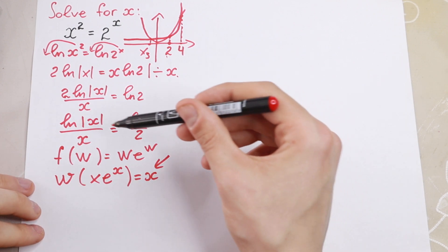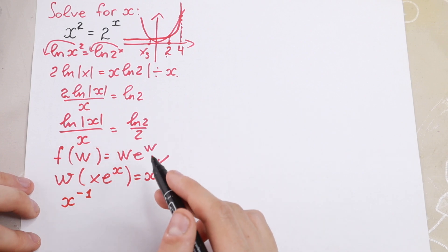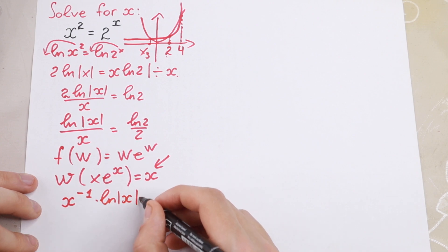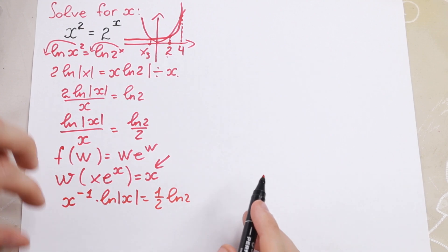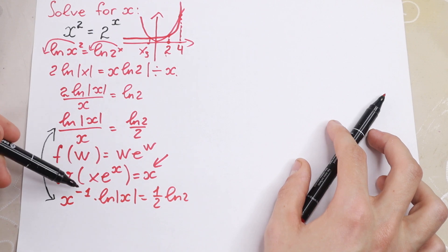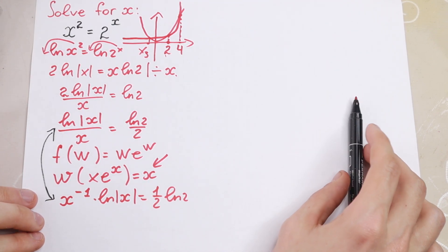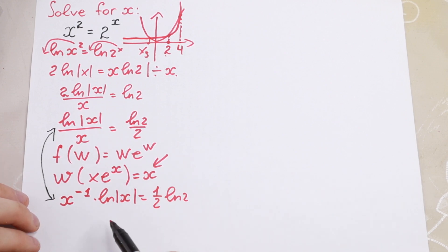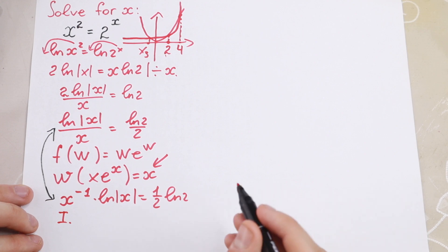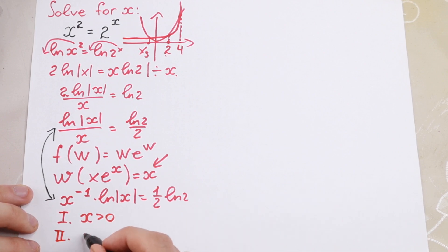I want to rewrite the expression another way: x to the power minus 1 — bringing x into the denominator — times natural log of |x|, equals one half times natural log 2. This is the same equation as before. We have an absolute value, so we will have two cases: the first case where x is greater than zero, and the second case where x is less than zero.